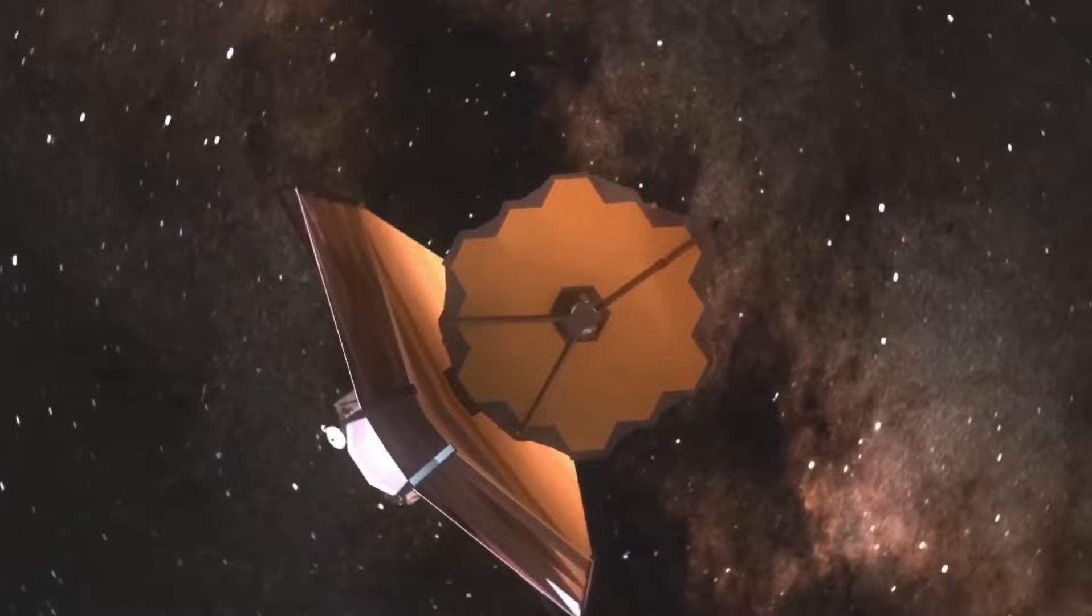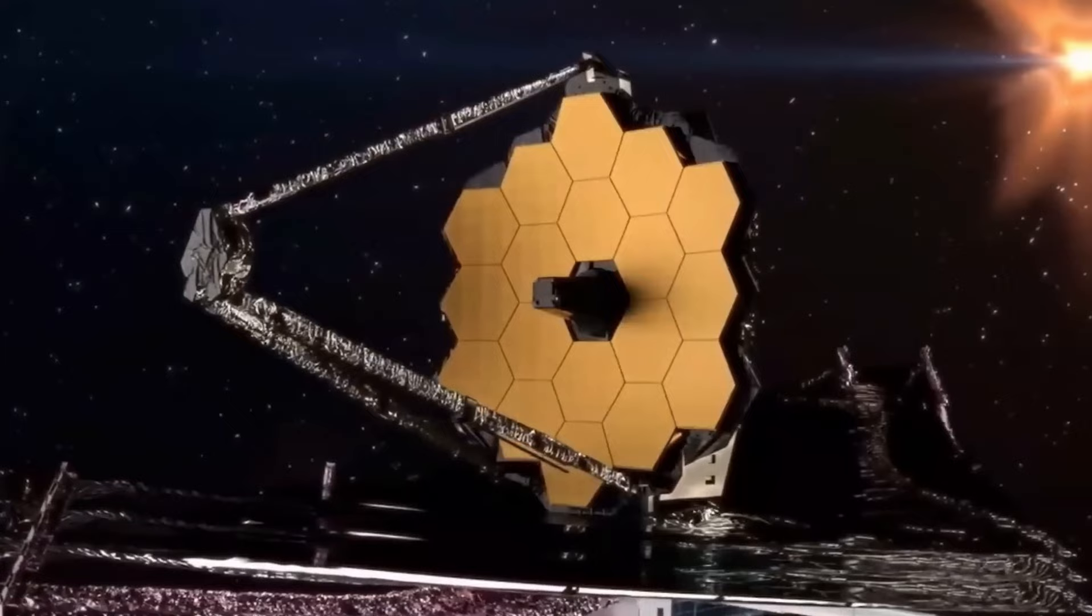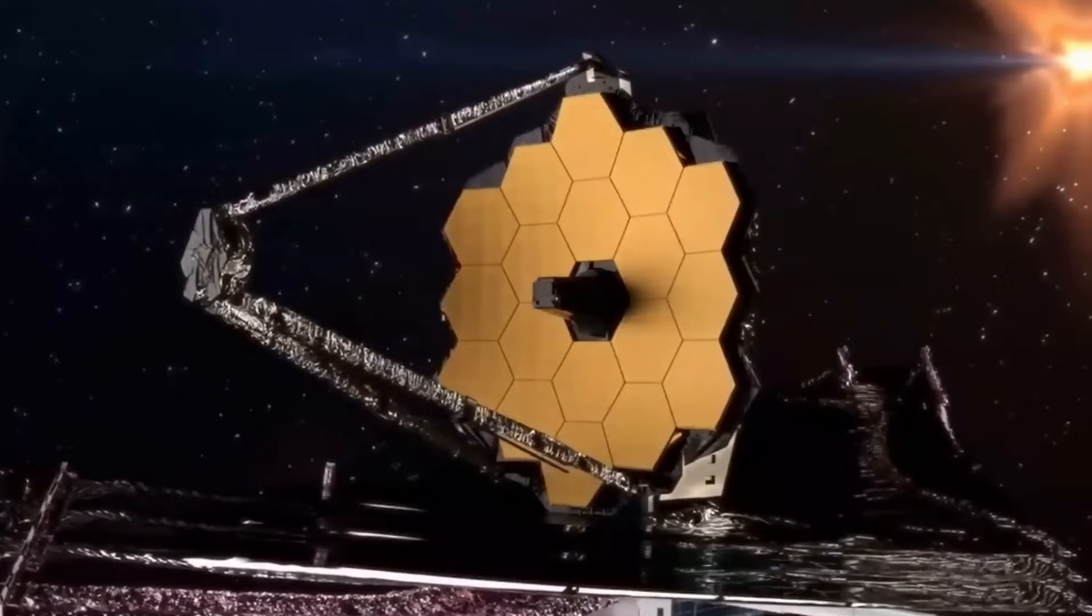While Hubble had found the earliest protogalaxy cluster previously known at 800 million years after the Big Bang, and the Sears collaboration found one just 1.2 billion years after the Big Bang, this cluster with a mouthful of a name of 82,744 Z7P90.